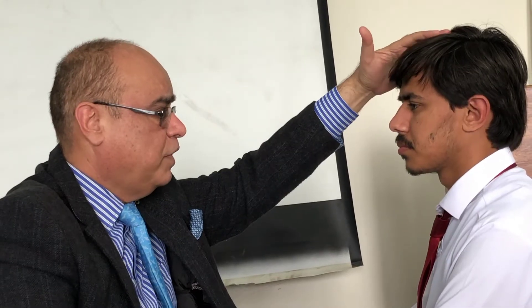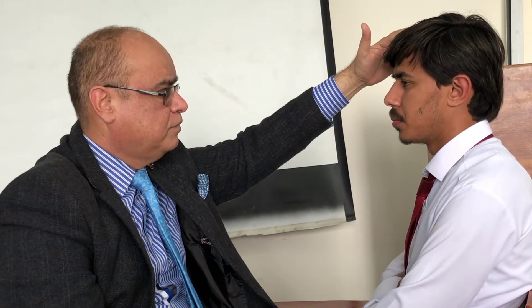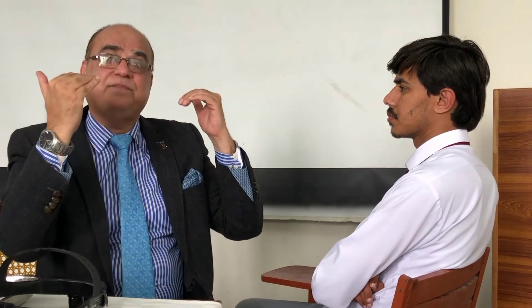Check the symmetry of the nasolabial fold. On the paralyzed side, the patient will not be able to close the eyes and there will be no frowning. In lower motor neuron lesions, the whole half of the face on the ipsilateral side is involved, while in upper motor neuron lesions, only the lower half of the contralateral side is involved — the upper half is spared due to bilateral representation.